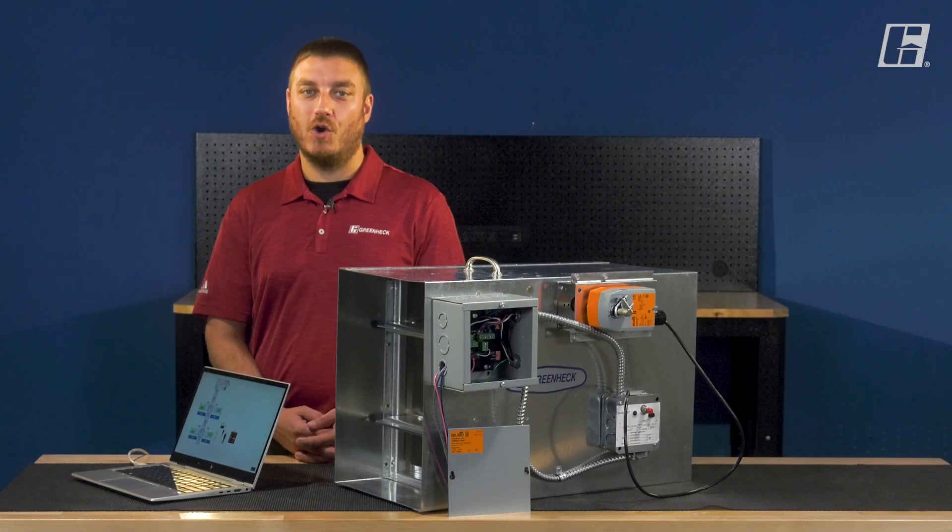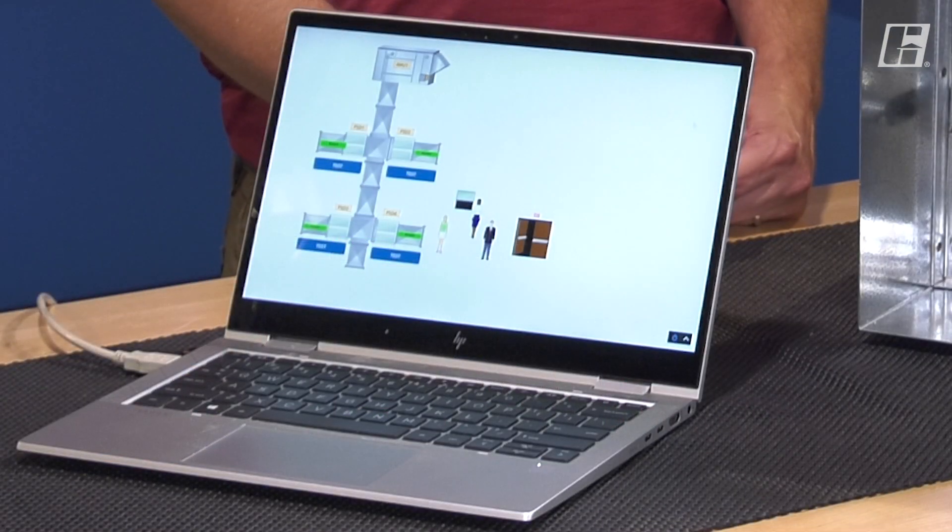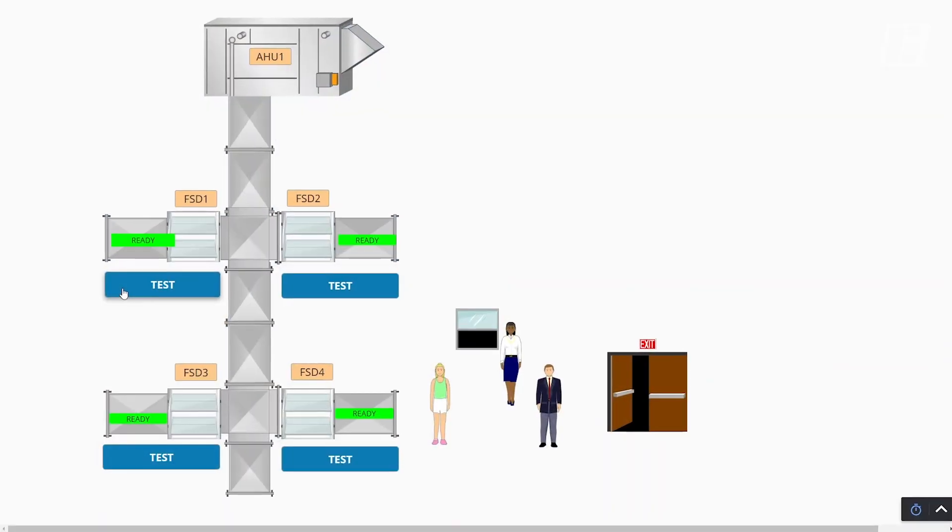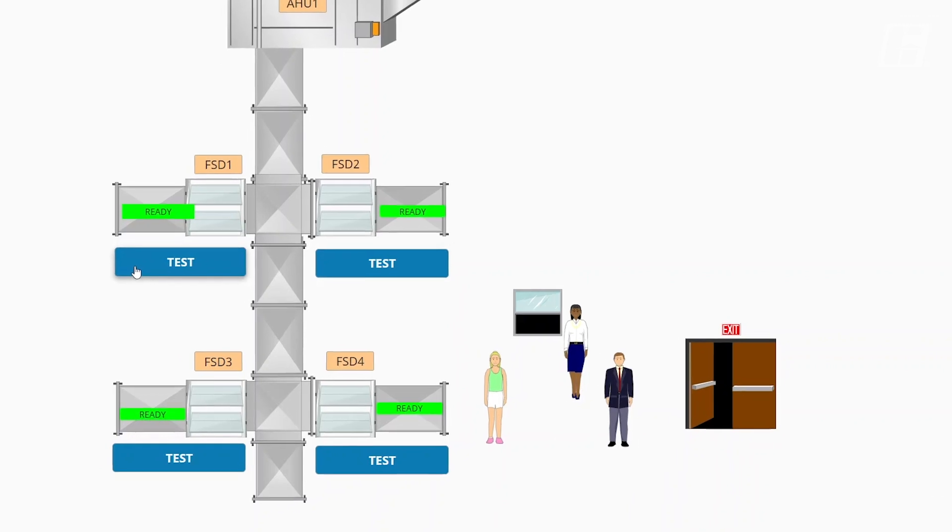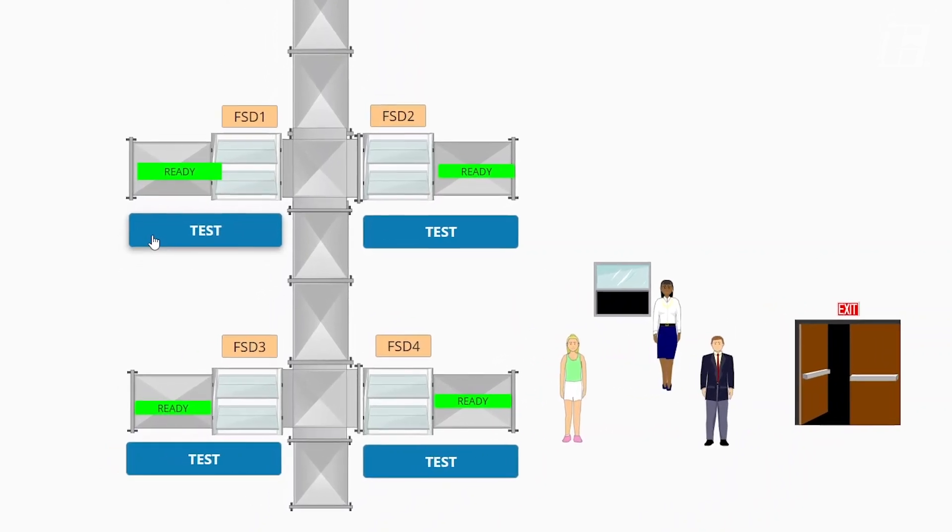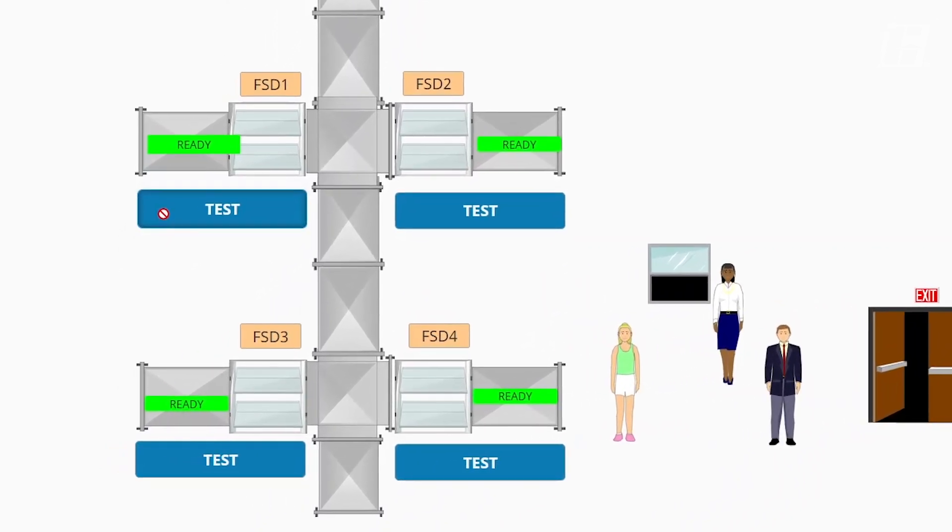Operation is easy as one, two, three. First, the building automation system commands the FSKN to close the damper by opening a normally closed relay contact and cutting power to the damper actuator.